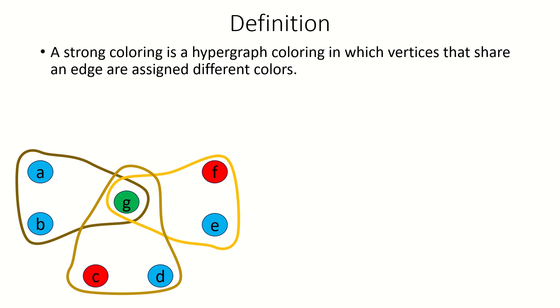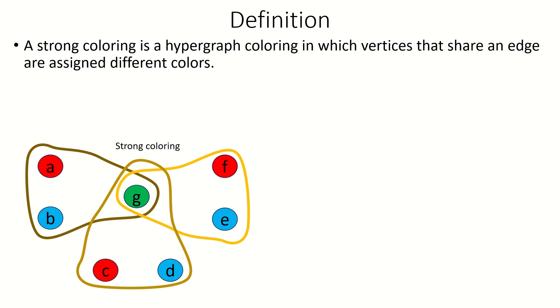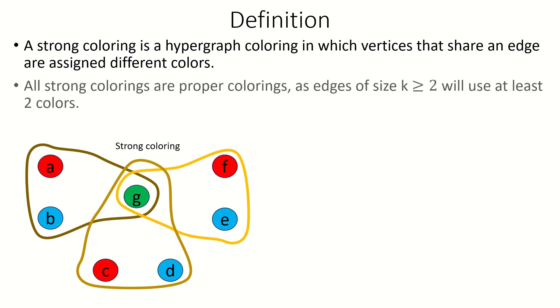Here's the same hypergraph with a strong coloring. Notice that our strong coloring is also a proper coloring of the hypergraph, which is a coloring where no edge of size 2 or greater is monochromatic.